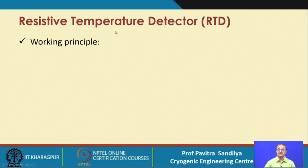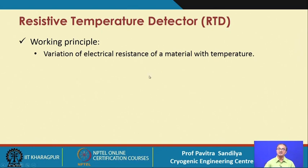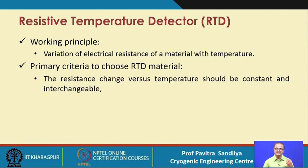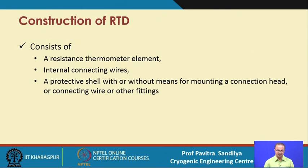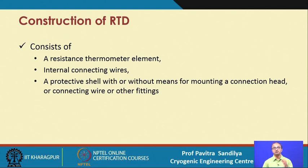The resistive temperature detector (RTD) works on the principle that the resistance of a material changes with temperature. Not all materials are suitable for RTDs — the sensitivity must be sufficient, meaning resistance change versus temperature should be constant and interchangeable, and the temperature coefficient should be large so it responds quickly to temperature changes. The RTD has a measuring element (resistance thermometer element) whose resistance changes with temperature, connected by wires and protected by a sheath.